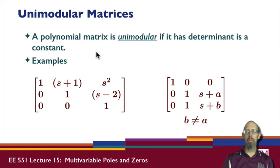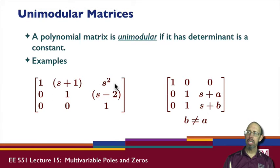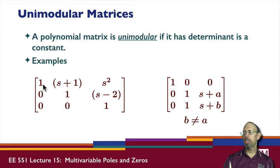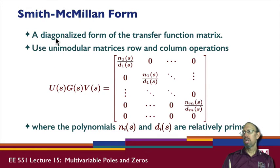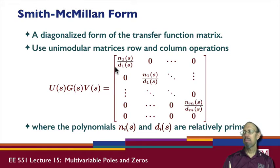We talked about something called a unimodular matrix when we discussed the matrix fraction description. Recall that a unimodular matrix is a polynomial matrix — that is, the elements are polynomials. The determinant of this polynomial matrix is one. The determinant of this polynomial matrix will not be zero as long as a is not equal to b, giving a constant determinant. The Smith-McMillan form of a transfer function matrix is a diagonalized form of a transfer function matrix — specifically a diagonal form.